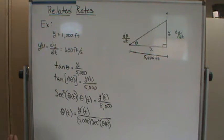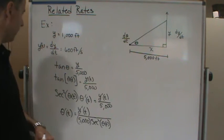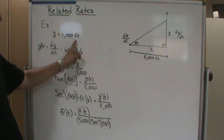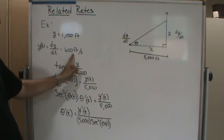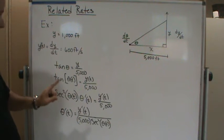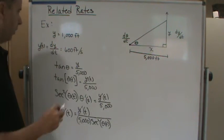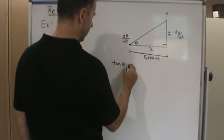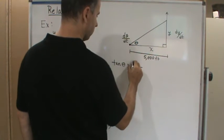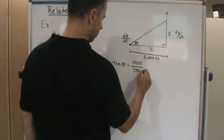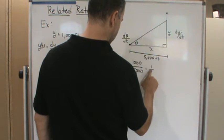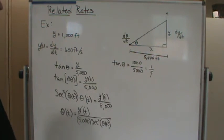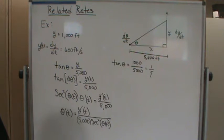We need to find what θ is when the rocket is 1,000 feet above the ground. Using tangent: tan(θ) = 1,000/5,000 = 1/5. But since our formula involves secant squared, we need to find secant θ, which equals 1/cos(θ). For cosine we need the hypotenuse s, so we'll use the Pythagorean theorem.